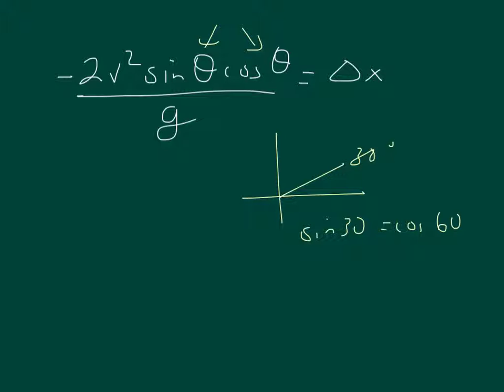So every angle is going to switch with its complement in this equation. So the complement of 12.5 degrees is going to work just as well, because if I do the sine of 13 degrees times the cosine of 13 degrees, that's going to be the same as the sine of 77 degrees times the cosine of 77 degrees.